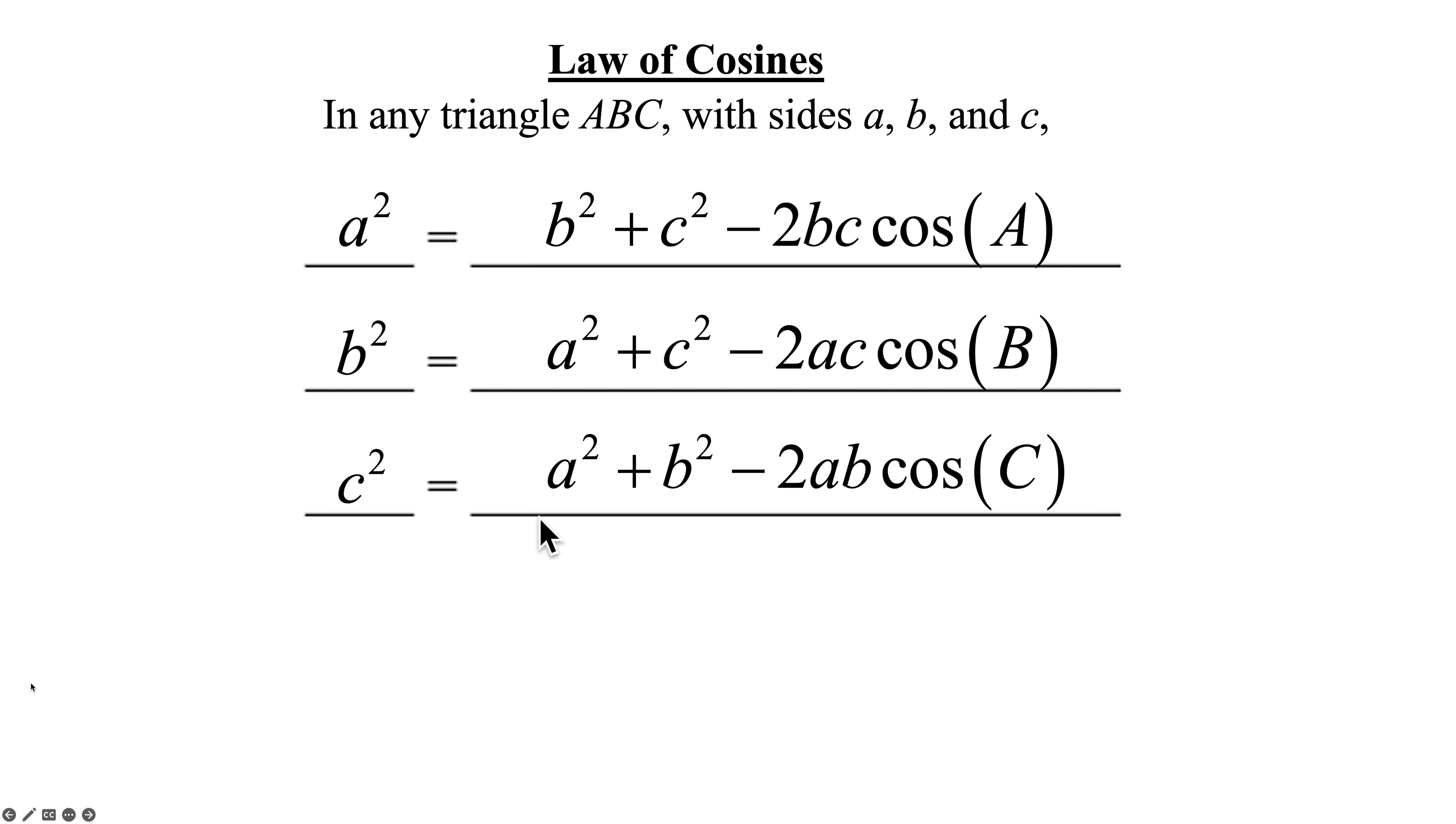Now, to be perfectly honest with you, this is the only one I memorized, because look, this is really close to the Pythagorean theorem. C squared equals A squared plus B squared. Then just tack on a minus 2AB times the cosine of C. And you're in business. That's my law of cosines.